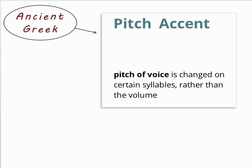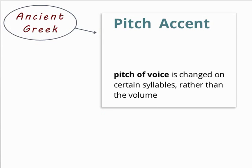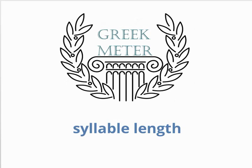For example, the Greek word gala was not pronounced 'gala,' but rather 'gala.' Given that ancient Greek had no real stress accent, it makes sense that Greek's meters would not depend on stress, but rather on something else — specifically syllable length.